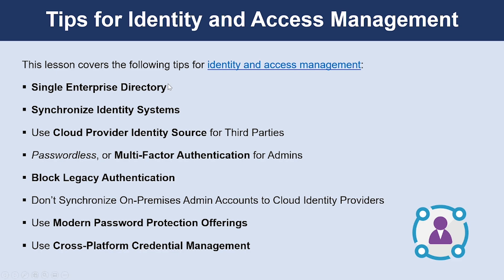Some of the tips for identity and access management include: single enterprise directory, synchronized identity systems, use cloud provider identity source for third parties, passwordless or multi-factor authentication for administrators, block legacy authentication, don't synchronize on-premises admin accounts to cloud identity providers, and using modern password protection offerings and cross-platform credential management.